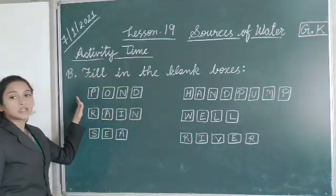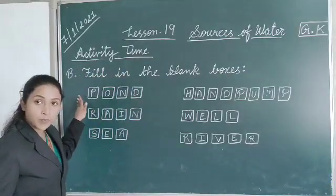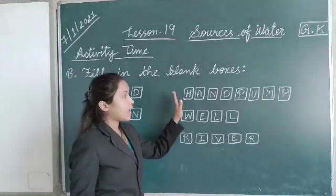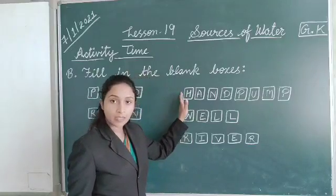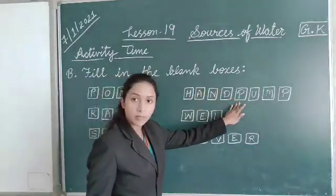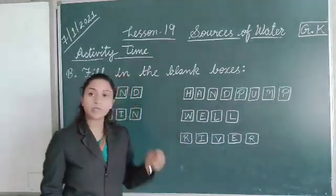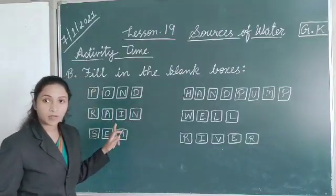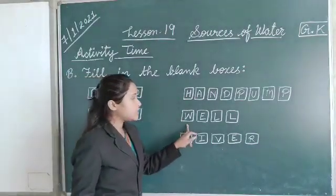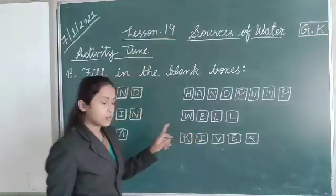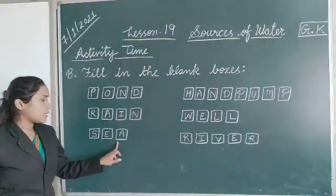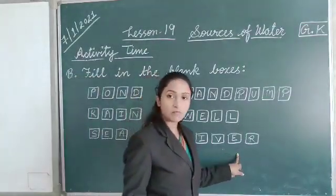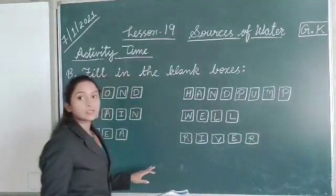So, from starting, we will learn the spelling. P-O-N-D, pond. Pond means talab. Next, hand pump, H-A-N-D, hand, P-U-M-P, pump. Hand pump means nal. Next, R-A-I-N, rain. Spelling of rain. W-E-L-L, well. S-E-A, sea. R-I-V-E-R, river.